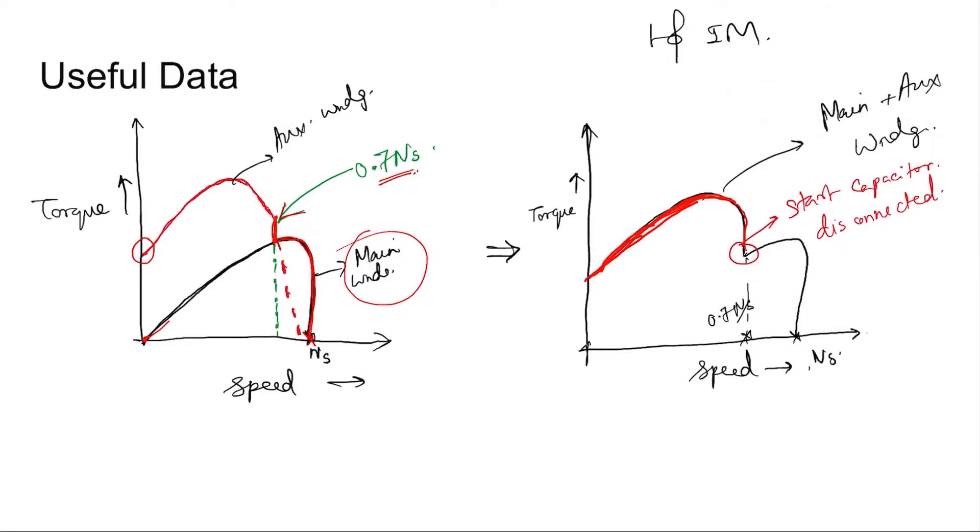Once the motor attains 70% of its maximum speed, that is the synchronous speed, the auxiliary winding is disconnected and the motor follows this curve. So, the effective curve becomes like this.